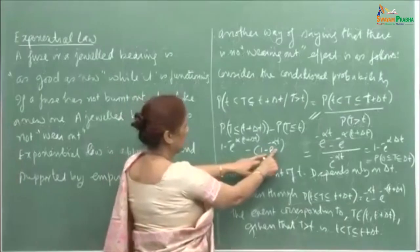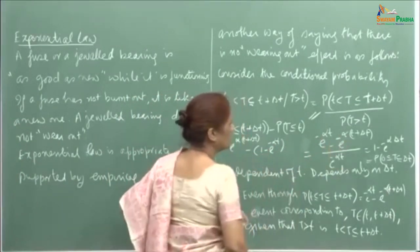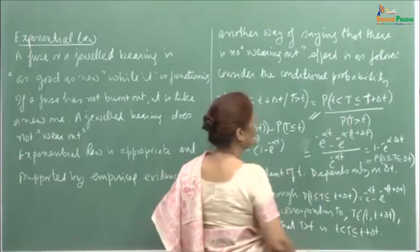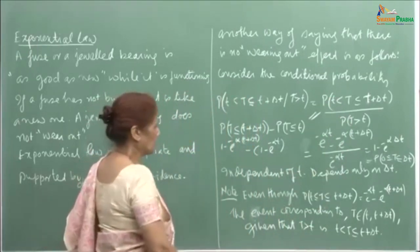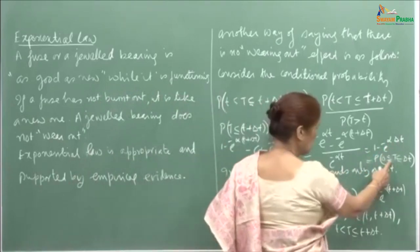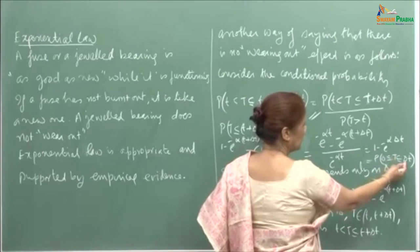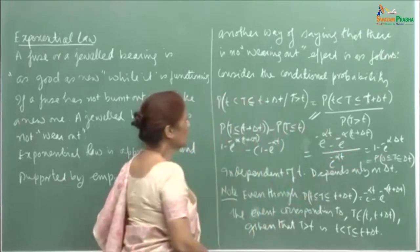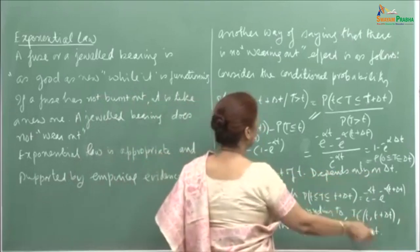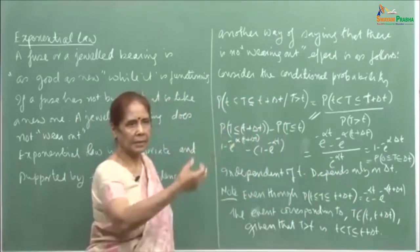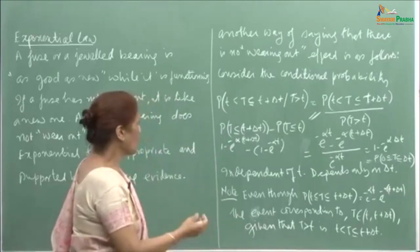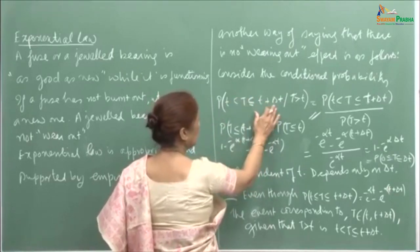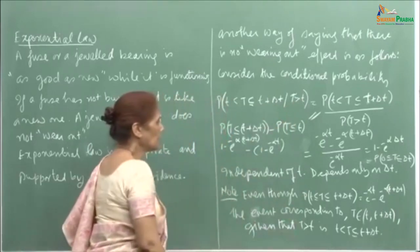This gives us e raised to minus alpha times (t plus delta T), divided by e raised to minus alpha t — I am showing this for the exponential law. This simplifies to 1 minus e raised to minus alpha delta T, which is nothing but the probability that T lies between 0 and delta T. This tells you that this conditional probability is independent of t — it depends only on the length of the interval delta T.